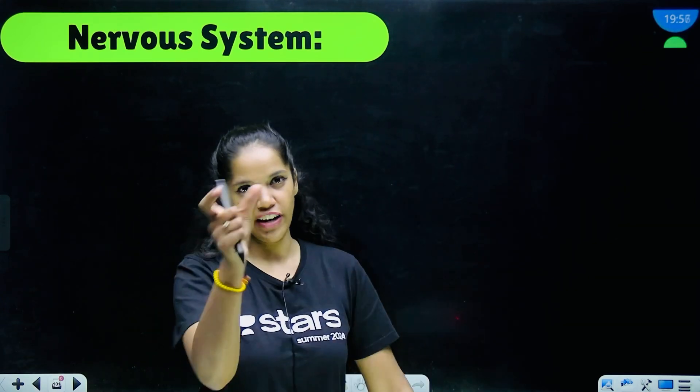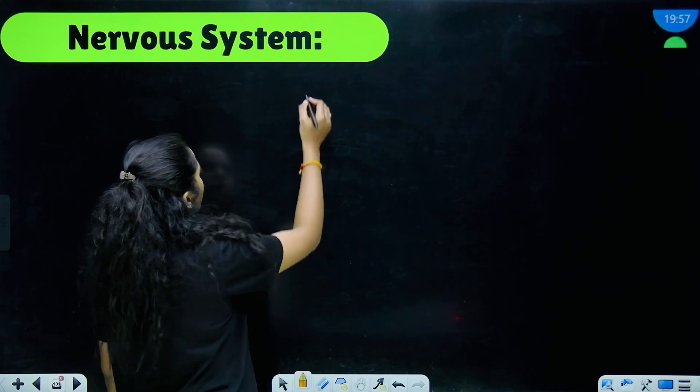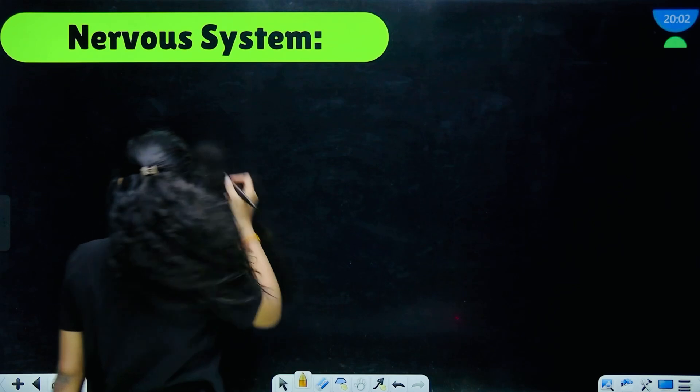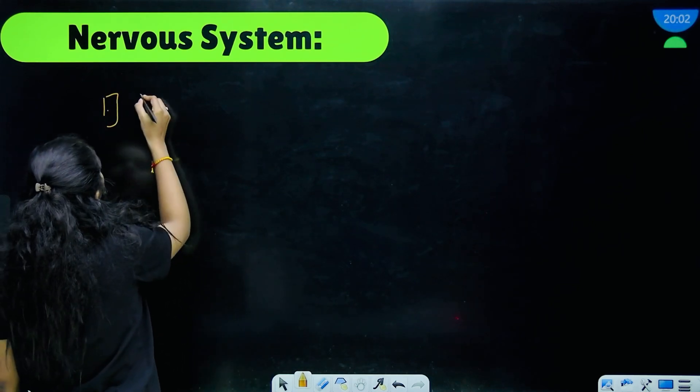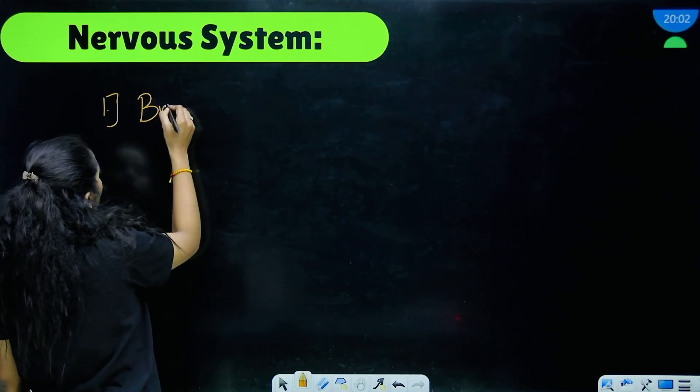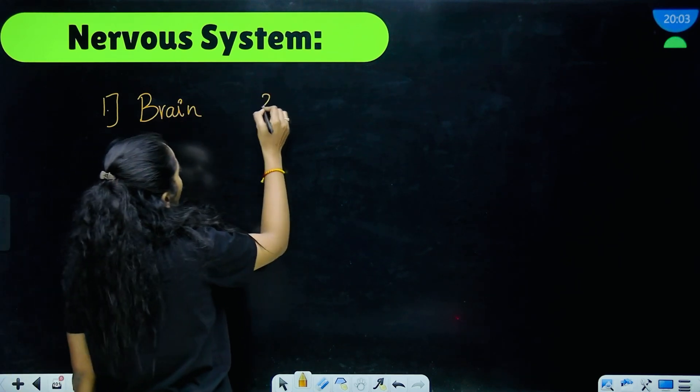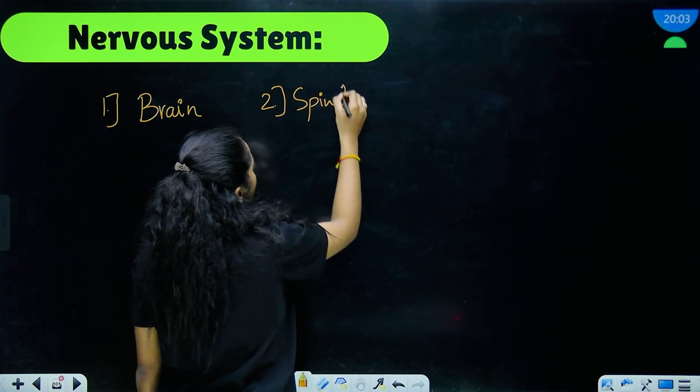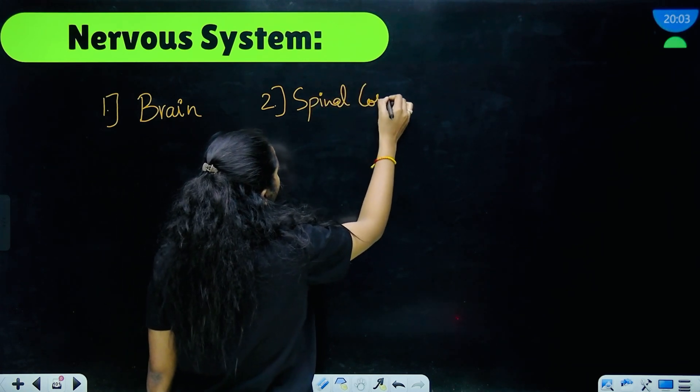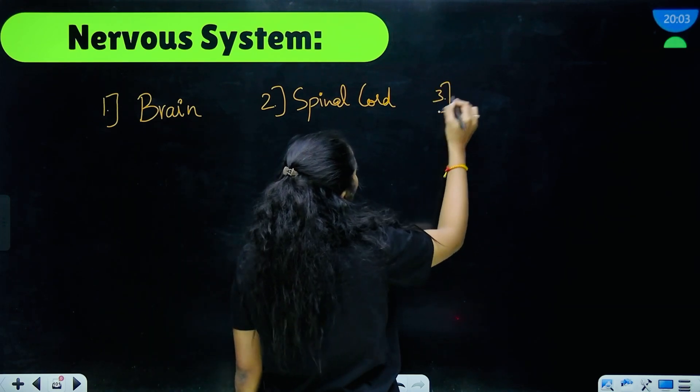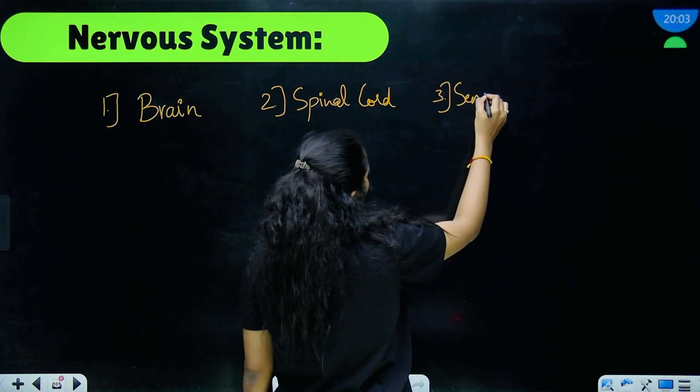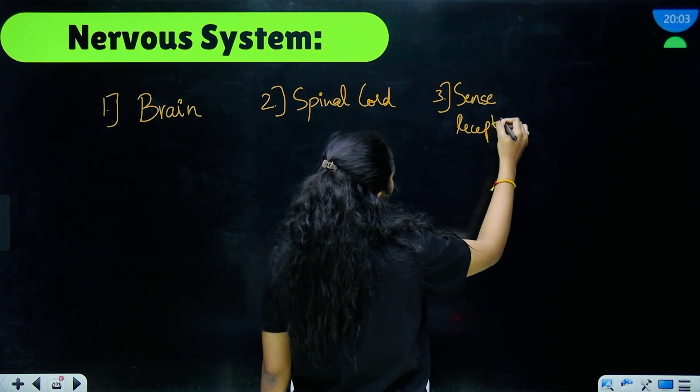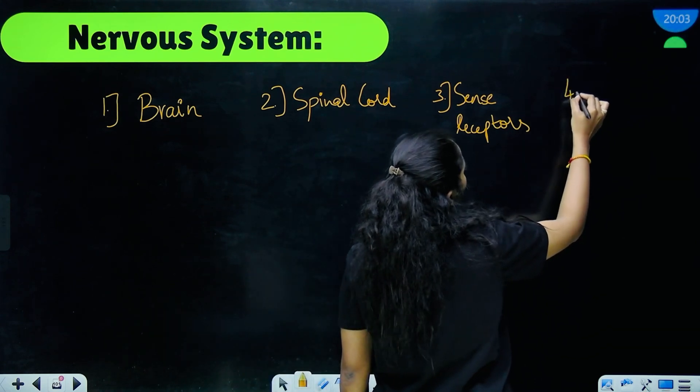And next, before we go into the next part of our revision, I just want to refresh your memory on this one thing: the nervous system comprises of four main parts which are the brain, the spinal cord, the sense receptors and nerves.